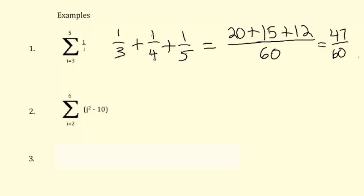Another one we can plug and chug our way through. We're going to start by plugging in 2 into this function. They're using j here instead of i. Plug in 2, you get 4 minus 10, that's negative 6. Plug in 3, you get 9 minus 10, that's negative 1. Plug in 4, you get 16 minus 10, that's 6. Plug in 5, you get 25 minus 10, that's 15. Plug in 6, you get 36 minus 10, that's 26. The negative 6 and the positive 6 cancel. Here we have 41, and then minus 1 would be 40.